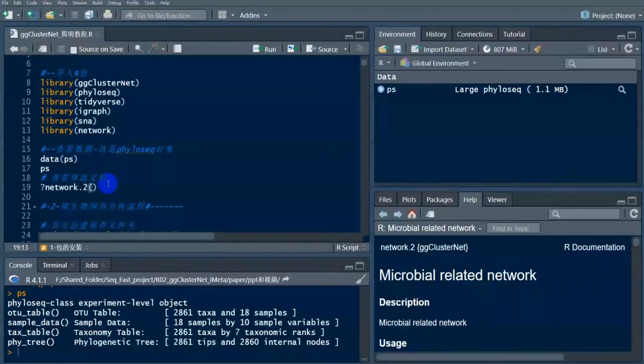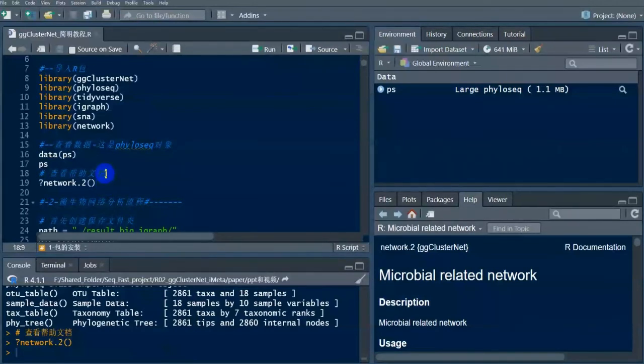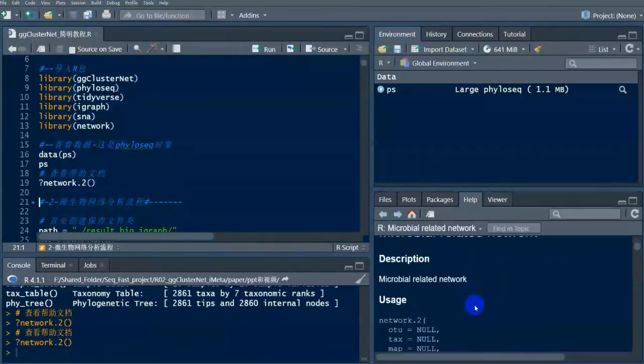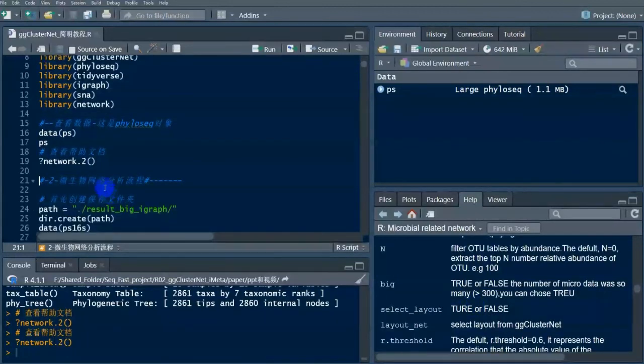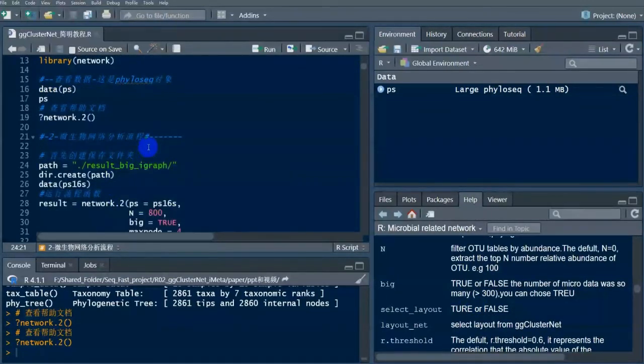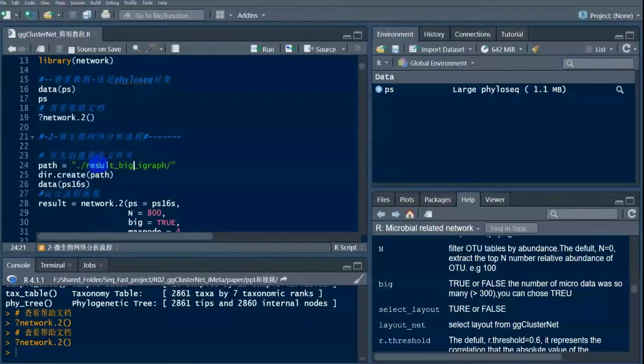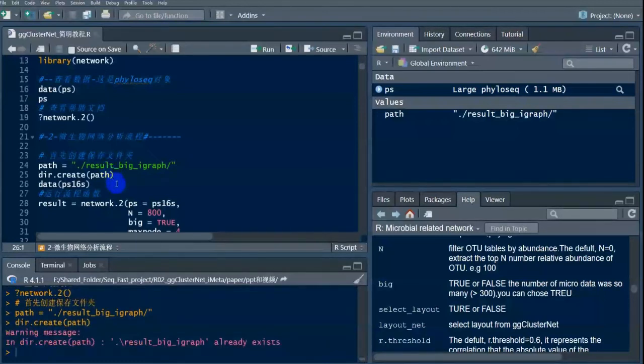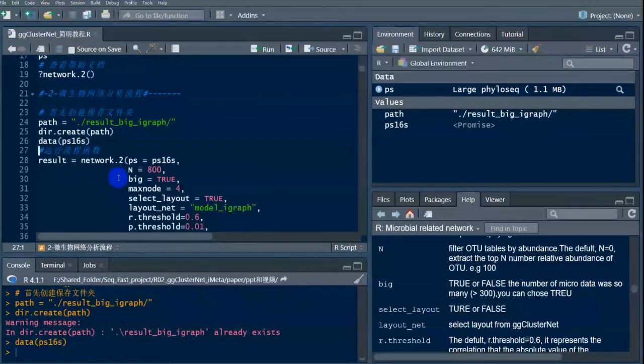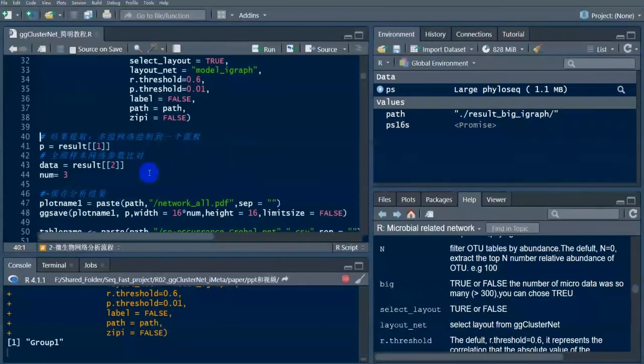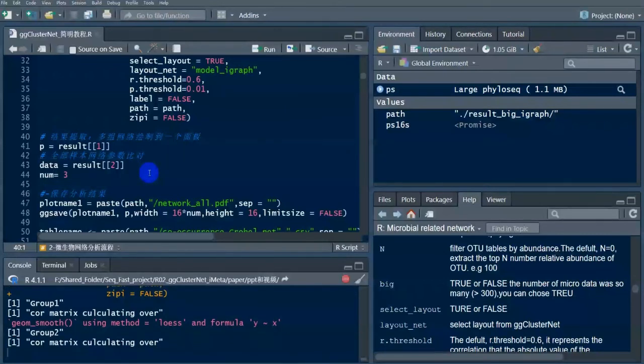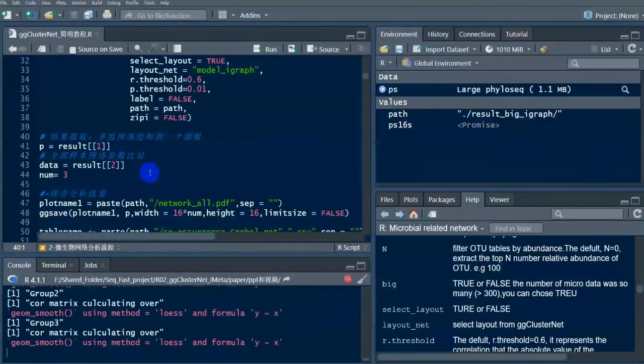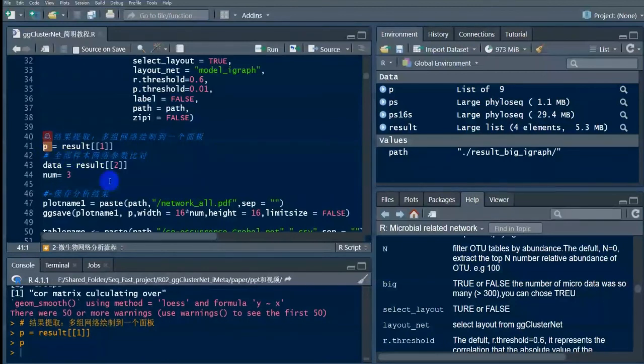Before analysis, look at the phyloseq-based microbe data built into GGClusterNet. Before profiling, check the function's help package. We first demonstrate the process of microbe network mining. Establish a folder for saving, analyze its results, import data and run the network tool function, extract multiple groups of networks and the network's attribute tables after analysis, and save all the results.